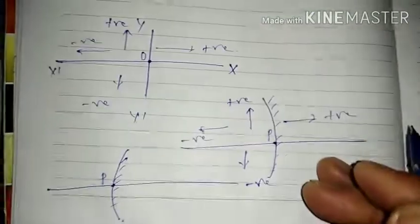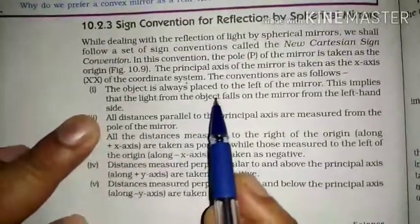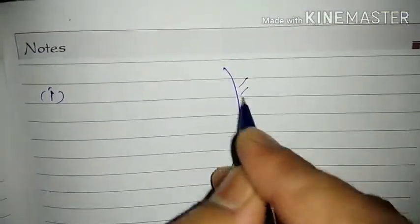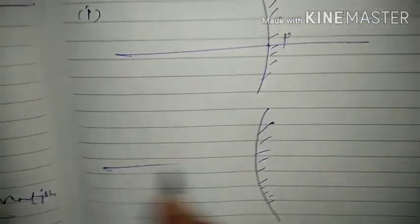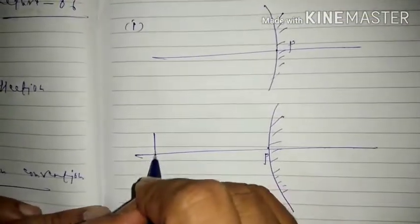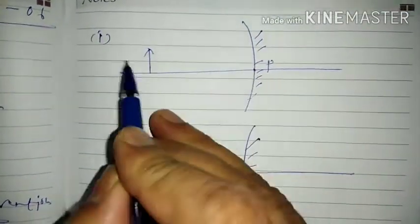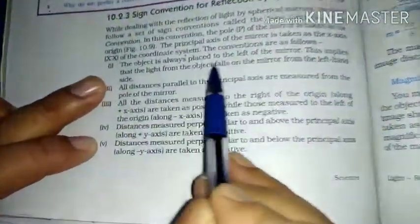Now we shall see the assumptions or key outcomes from this sign convention, as given in our NCERT book. First point: the object is always placed to the left of the mirror. According to the new Cartesian sign convention, objects are always placed to the left — whether it is a concave mirror or a convex mirror. In both cases the object will always be to the left of the mirror.